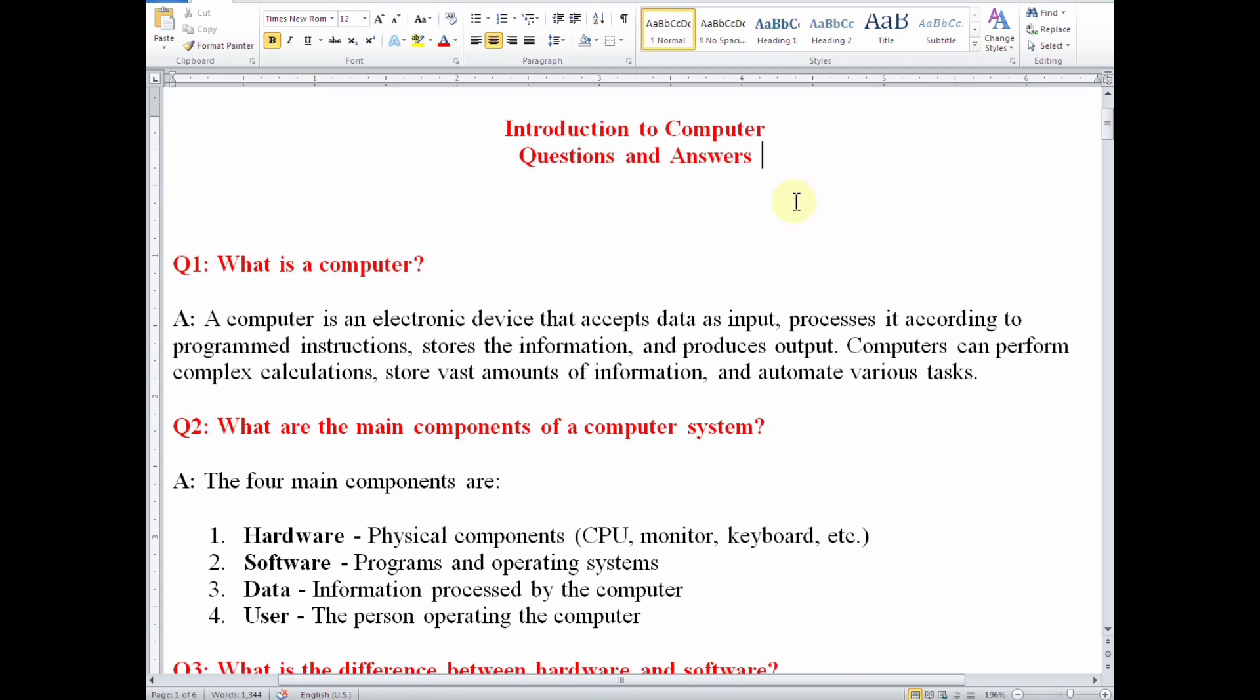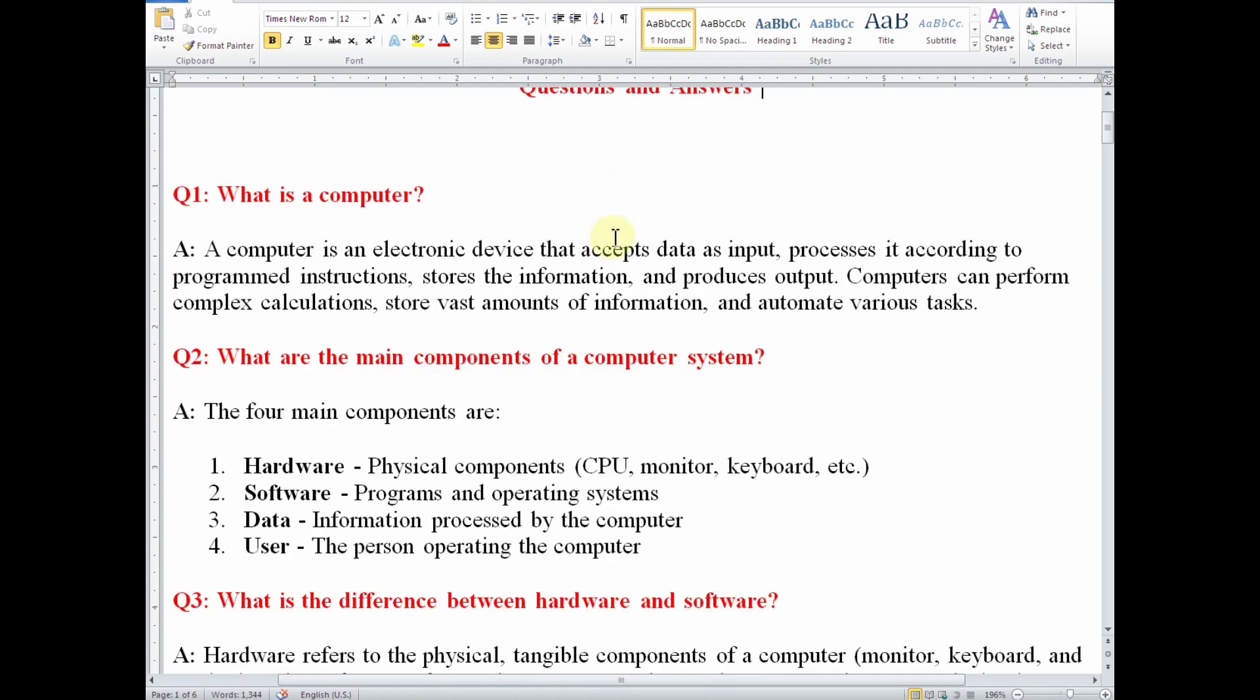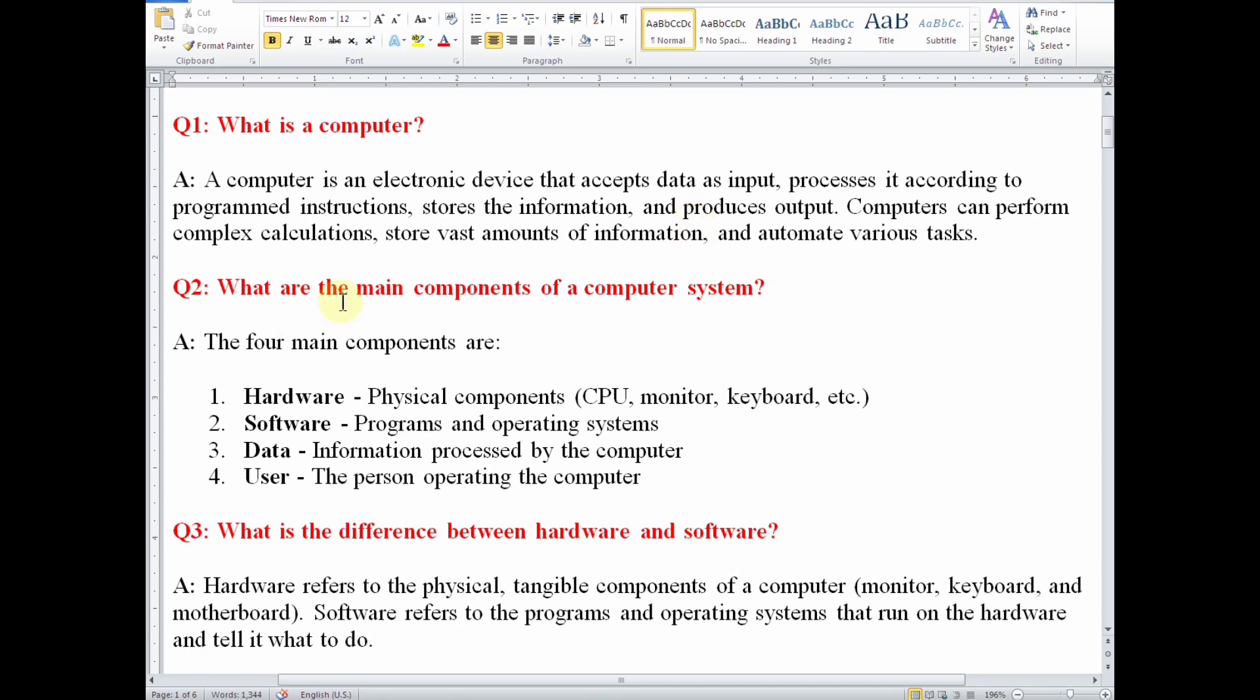The four main components are hardware, which consists of physical components like CPU, which in full is central processing unit, monitor, keyboard, among other examples. Software are just programs and operating systems of the computer. Then data is the information processed by the computer. Then number four, the user, the person operating the computer. The computer cannot operate on its own. There has to be someone operating the computer, and therefore they have included here the user.